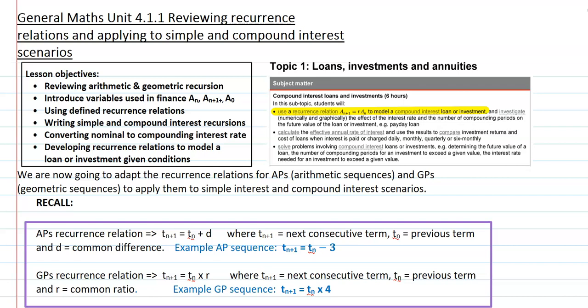I've attached a copy of the syllabus point we're ticking off here. The lesson objectives include reviewing what we did back in Unit 3 with arithmetic and geometric recursion, applying that to new finance terminology, and then being able to use recurrence relations. The second half we'll look at writing simple and compound interest recursions. We also need to look at converting nominal to compounding interest rates, and finally see if we can use those recurrence models in a loan or investment scenario.